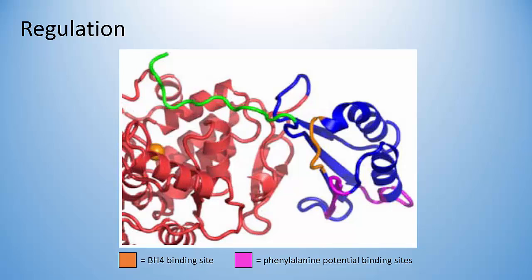The enzyme can also be phosphorylated at serine-16, which causes a conformational change that promotes binding of phenylalanine to the allosteric site, thereby boosting catalytic activity of the enzyme.